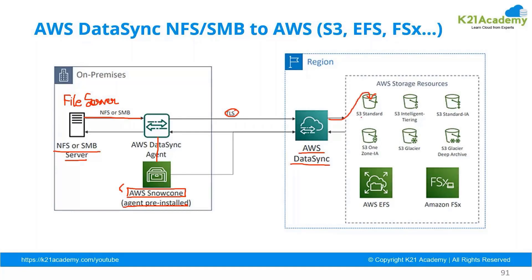The data can be migrated into an S3 bucket and kept in Standard, Intelligent-Tiering, Infrequent Access, or One Zone — any type of S3 storage class. It can also be transferred to EFS and FSX. This is how the DataSync feature works. It is basically used either for data mirroring or for data migration purposes.